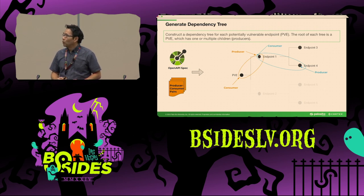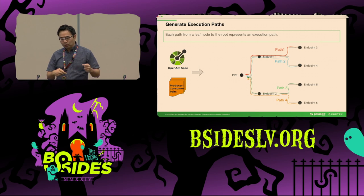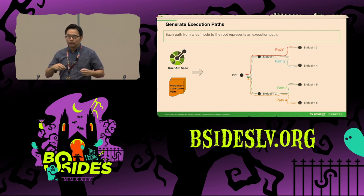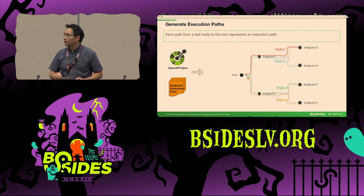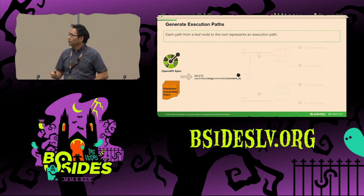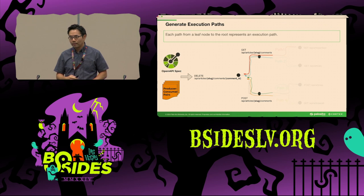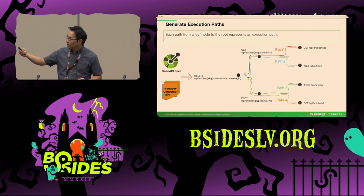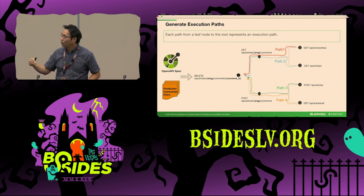With all dependency relationships figured out, we calculate the execution path to each target endpoint. In the dependency tree, a path from the root node represents an execution path, and there can be one or multiple execution paths to each target endpoint. For example, the PVE 'delete comment' has two producers — 'get comment' and 'post comment' — and each of those has two producers, resulting in four execution paths to 'delete comment.'